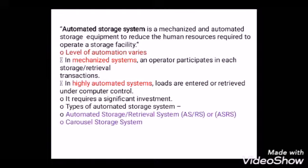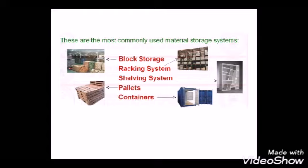Automated storage systems basically started with mechanization, and right now we have fully automated systems. The first stage is mechanization; the second is automation. In automation there are two varieties: automated storage and retrieval system, and carousel storage system. These are the common storage systems generally found in the manufacturing industry.